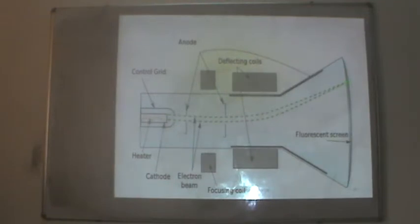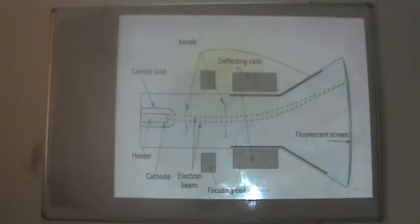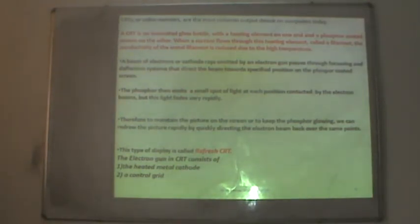The electron beam is passed through the deflecting coils. There are two deflecting coils which deflect the electron beam so it strikes a particular position on the fluorescent phosphorous screen. There are also two focusing coils which focus the beam of the electron gun onto the phosphorous screen. CRTs are the most common output devices on computer systems.